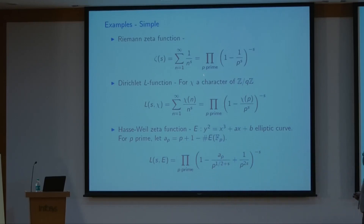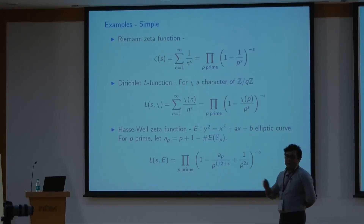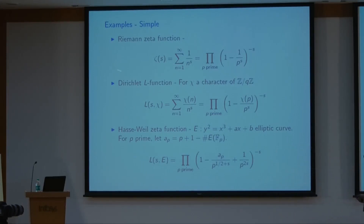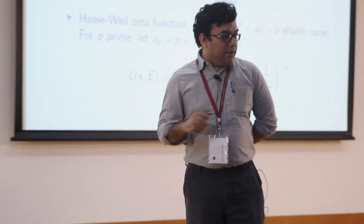The next class of L-functions was studied by Dirichlet. If you start with a character chi of the group Z/qZ, where q is a positive integer, then he defined L(s, chi) = sum of chi(n)/n^s. It's almost like the Riemann zeta function, except instead of 1 in the numerator, you have chi(n), where chi(n) takes values on the unit circle. These L-functions make sense for all complex numbers except possibly s = 1, and there is a functional equation relating the value at s to the value at 1 - s.